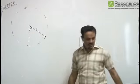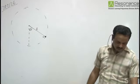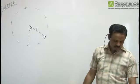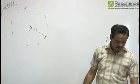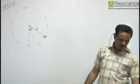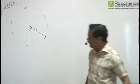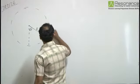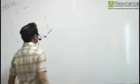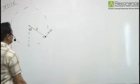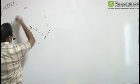Now, what minimum tangential velocity should the block be given so that it can move in a complete vertical circle? Let us assume the tangential velocity given here to be equal to u.